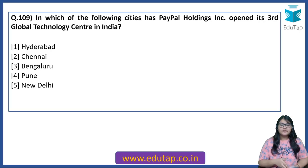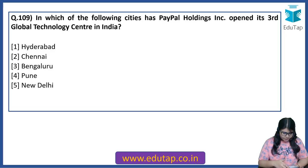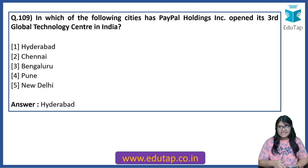In which of the following cities has PayPal Holdings Inc. opened its third global technology center in India? There are already two centers in India — one in Bengaluru and the other in Chennai. The answer is Hyderabad. Hyderabad has become the third city after Chennai and Bengaluru where PayPal has opened its global technology center.